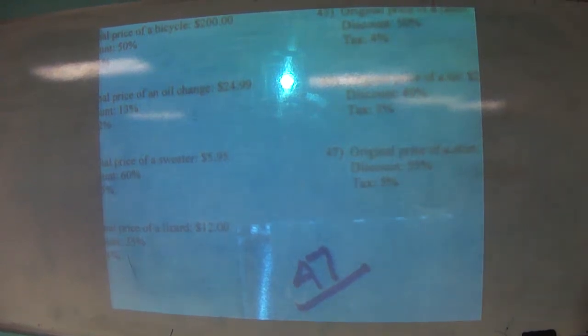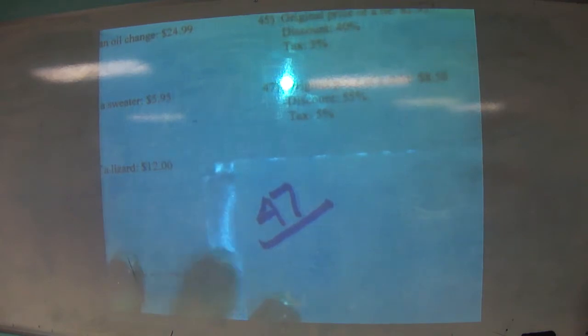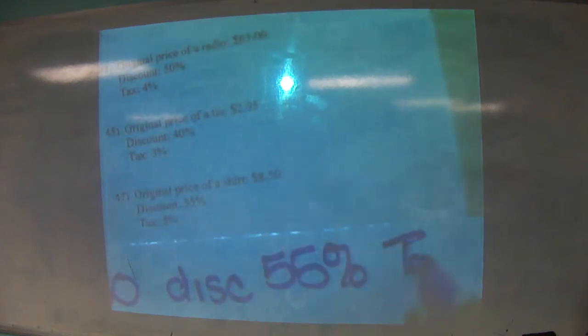Okay, on number 47, we're buying something and I want to talk about something a little bit. Original price of the shirt is $8.50. It's discounted 55%, obviously it's on clearance, and then it's taxed 5%. So typically it's just half off?